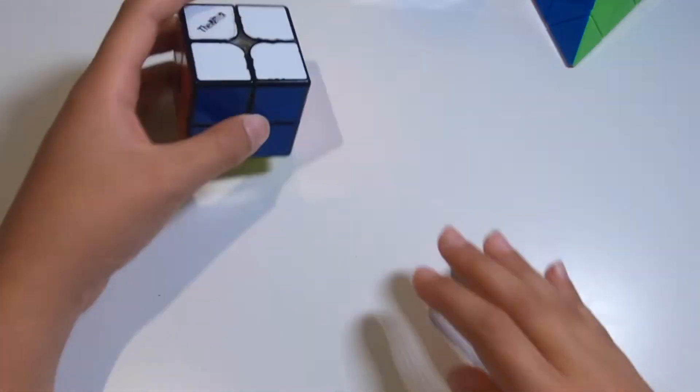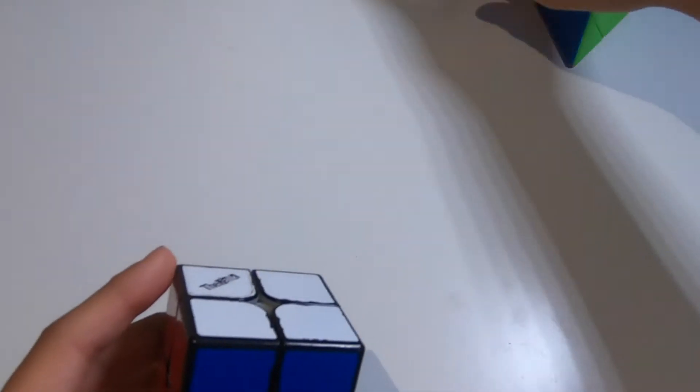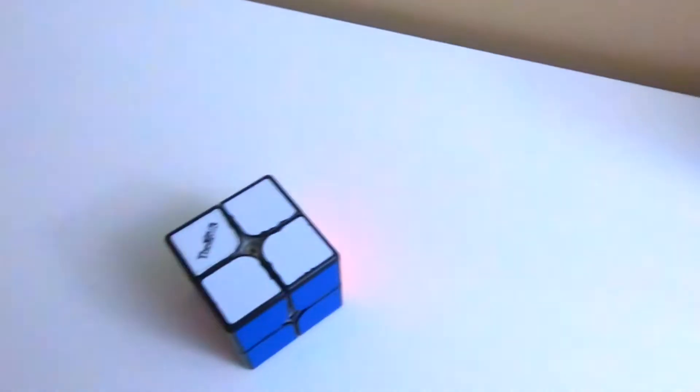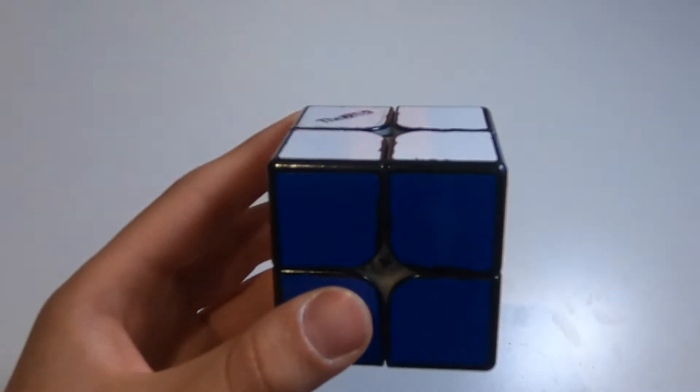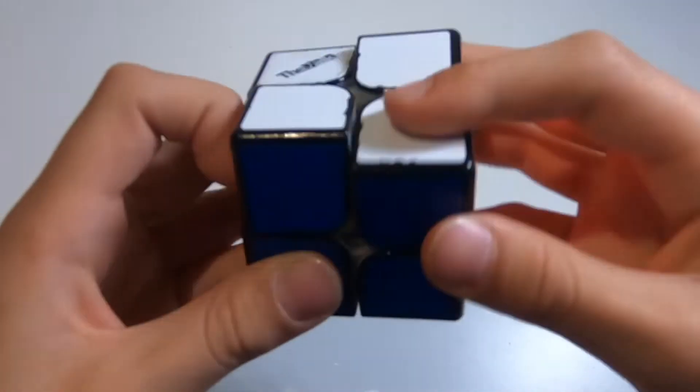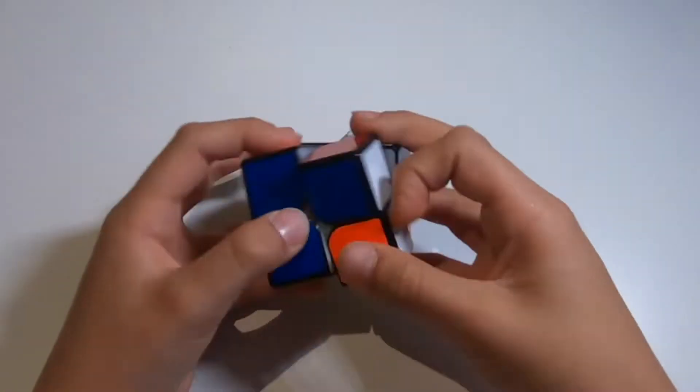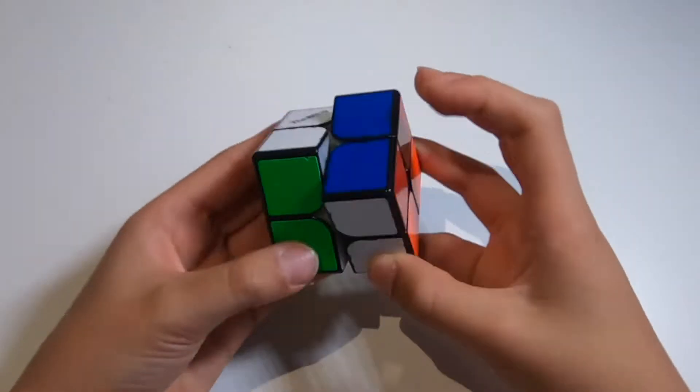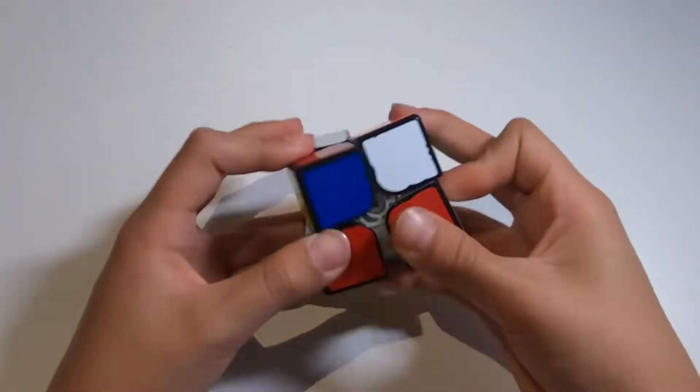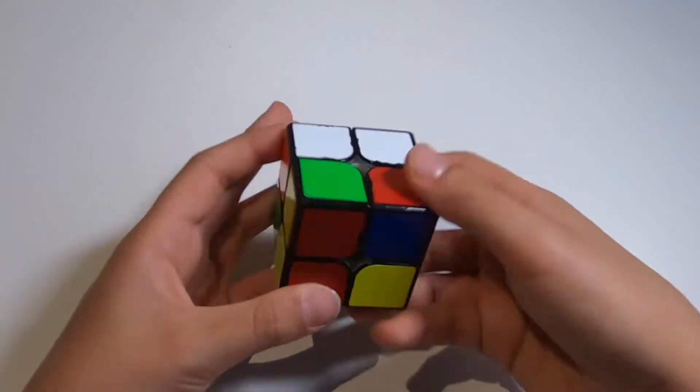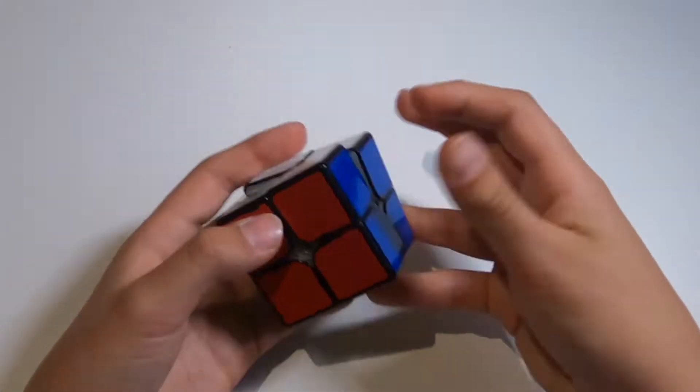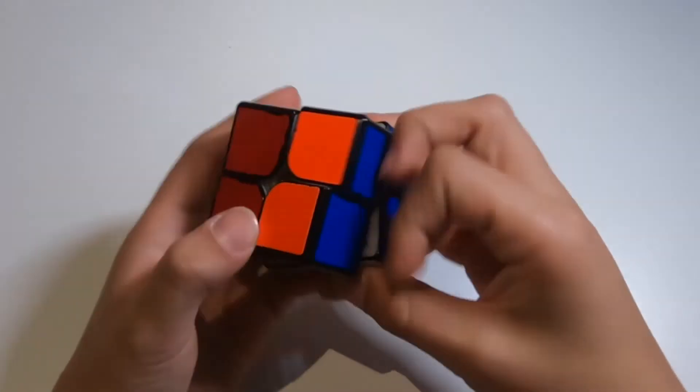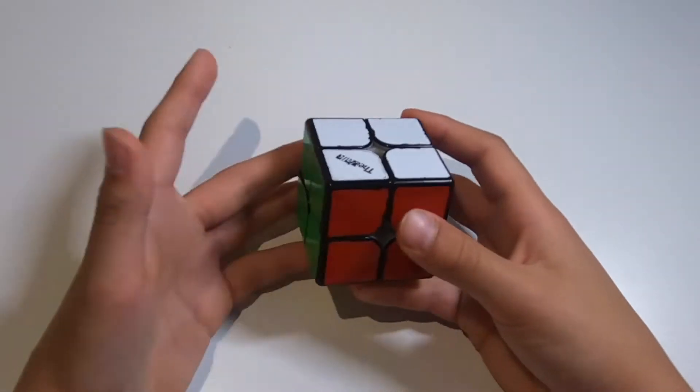So we're actually gonna be starting off with one of the most hopeful events of this competition, and this is actually the event of 2x2. Now for 2x2, I'm using the Valk 2M. This cube is pretty fantastic. The cube has a smooth, controllable feeling. For 2x2, I'm probably hoping for a podium right now. I want to get a sub 3.5 average, and that will probably easily get me a podium, and it's always nice to get a podium.